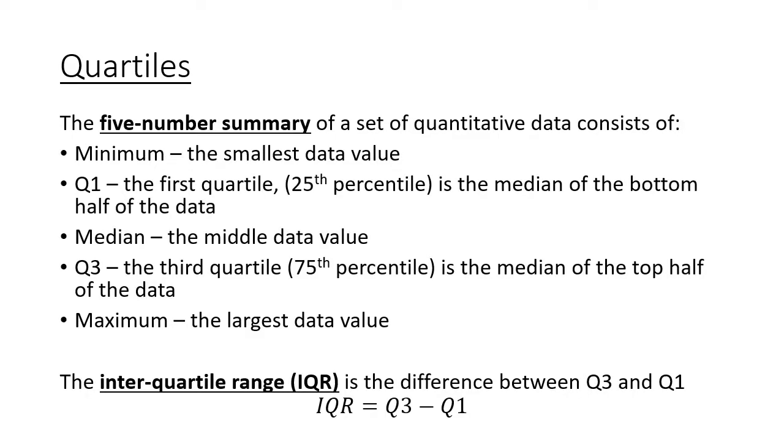This is actually what's called our five-number summary. Our five-number summary consists of our minimum or smallest value, Q1, also called the first quartile, sometimes referred to as the 25th percentile, and it's the median of the bottom half of the data. Then we have our median, which we've described quite a bit already. Then there's Q3, which is our third quartile or the 75th percentile, and it's that median of the top half of the data. And then finally, the maximum.